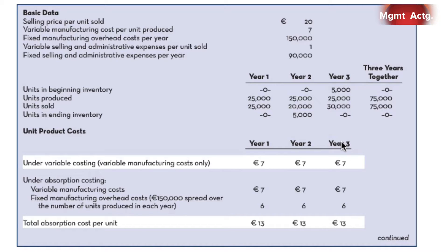Here's the layout of the story with our basic data. The important things to pay attention to: variable manufacturing cost per unit is $7, and the fixed manufacturing overhead costs per year are $150,000. Notice that units produced each year are going to be the same — production is constant at 25,000 units per year. So we can see that we're going to incur about $6 in fixed manufacturing overhead costs per unit.